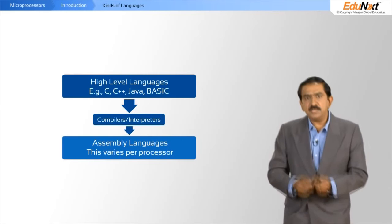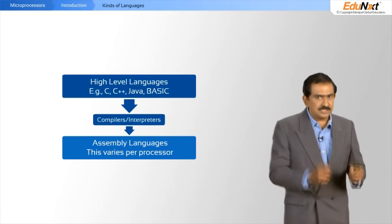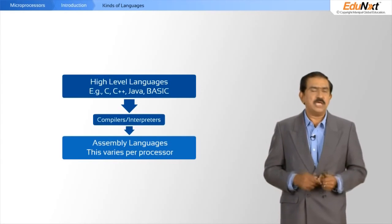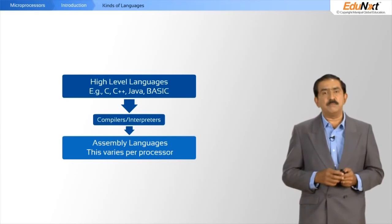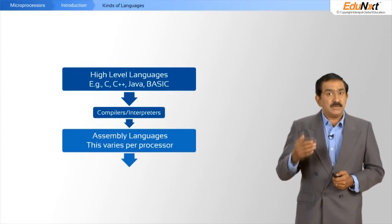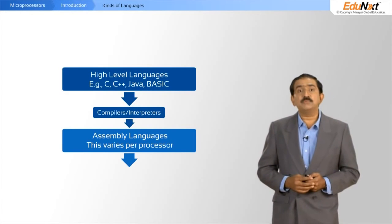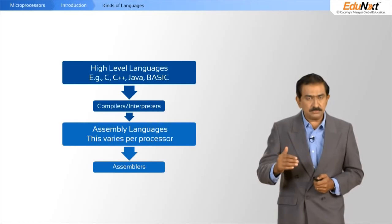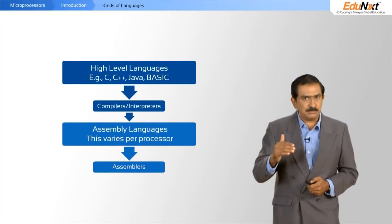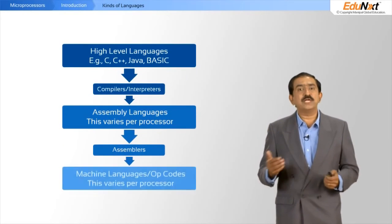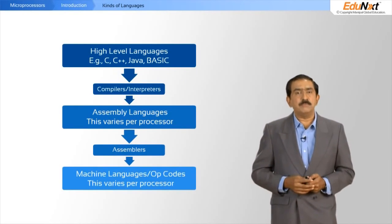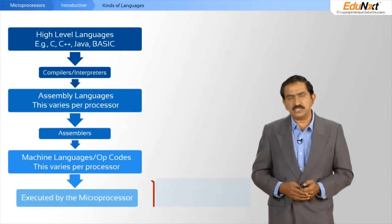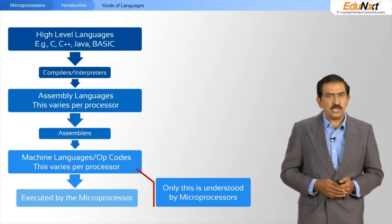Assembly level languages are very processor-specific — the 8086 has its own assembly language that cannot be understood by processors from other manufacturers. But the assembly language also cannot be understood by the processor itself. It must be assembled by an assembler, and only after assembly do you get what is called machine code or opcodes, which the processor understands.